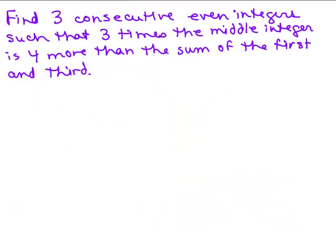All right, next problem. Find three consecutive even integers such that three times the middle integer is four more than the sum of the first and third. Again, we are looking for even integers. Remember, if you're looking for odd or even integers, you've got to go up by twos.